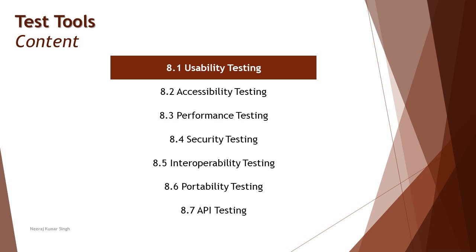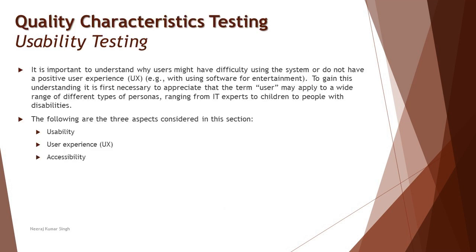Today, as part of this tutorial, we'll be stepping into the very first segment, which is 8.1 usability testing. Let's understand what aspects make up the usability of a system and how we evaluate the user friendliness of a system. Usability is a quality characteristic of any application or system which helps an end user interact with it without any problem or challenges.